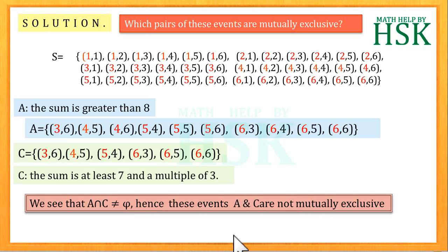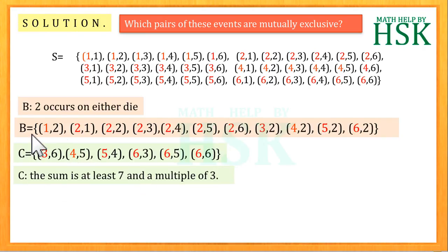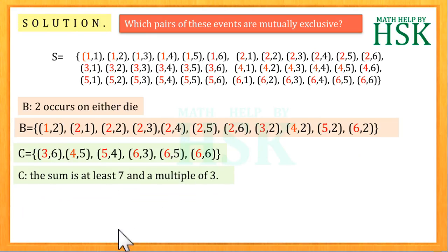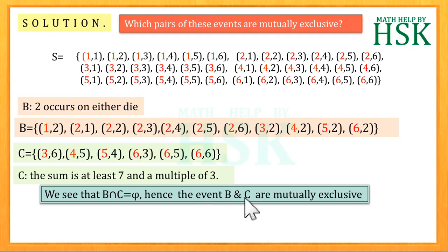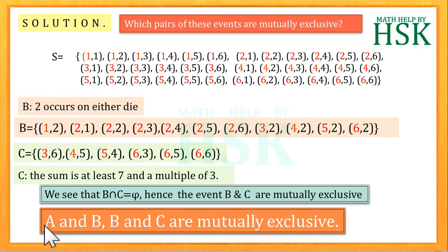Again, if we observe the events B and C, we see that they have no outcomes in common, therefore B intersection C is equal to phi, hence events B and C are mutually exclusive. Hence we can conclude that from the events A, B and C, the events A and B and the events B and C are mutually exclusive, which is the required answer.